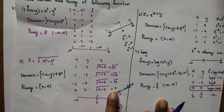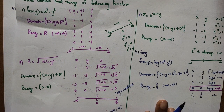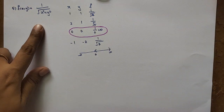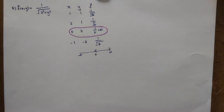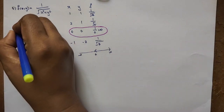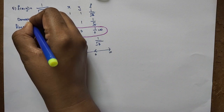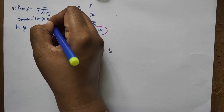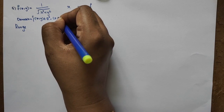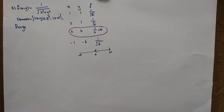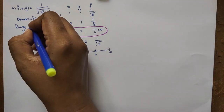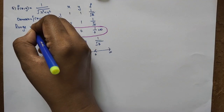So the domain excludes the origin: the ordered pair (x,y) in R² such that x²+y² ≠ 0. The range is (0, ∞) — open interval, since f is always positive and never reaches 0 (numerator is 1, denominator is always positive).